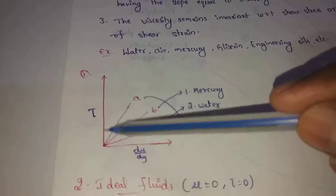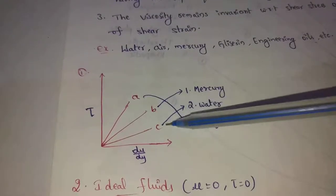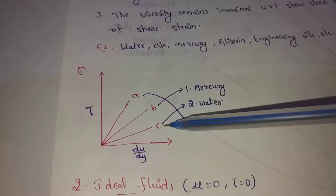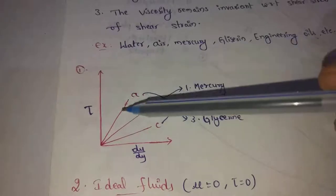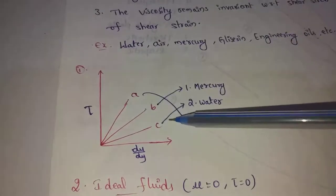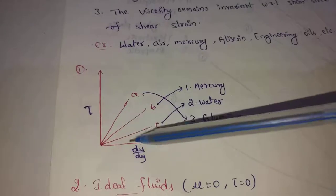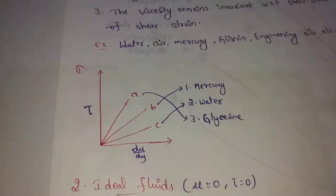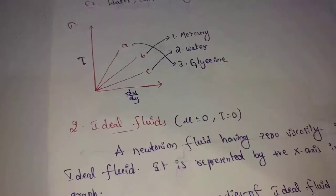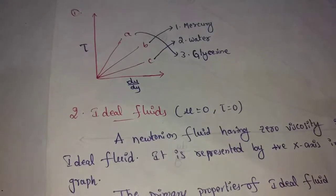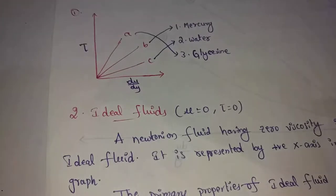This is rigid body and this is ideal body. A corresponds to glycerin, B corresponds to mercury, C corresponds to water. These are shown in the diagram.